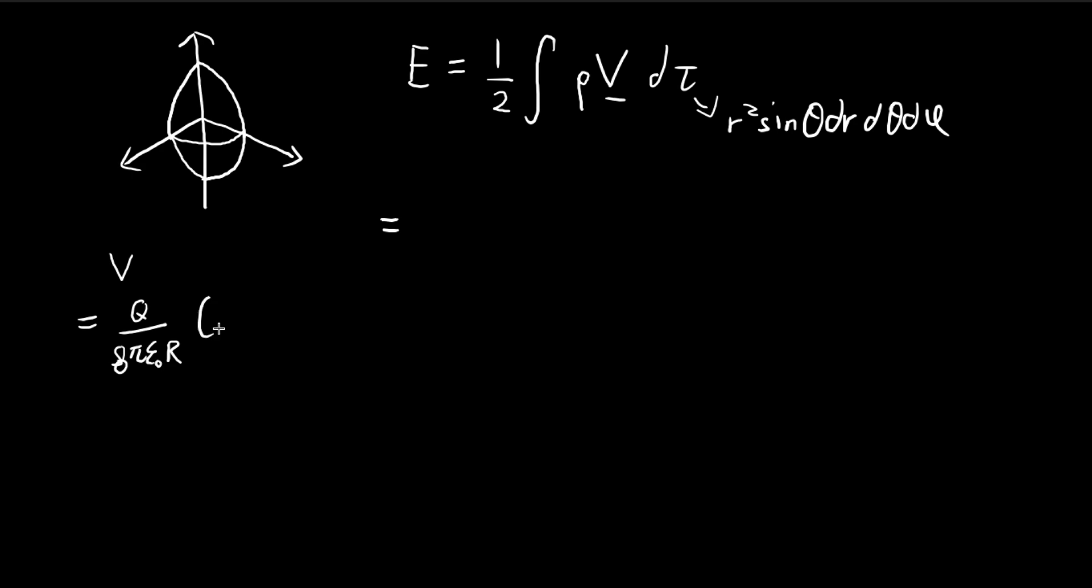This small r is the distance from the point we're considering to the center of the sphere, and this big R is the radius of the sphere. Using this formula, how do we calculate the energy? We just substitute everything in.